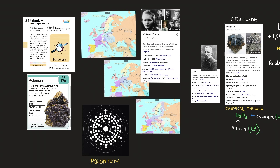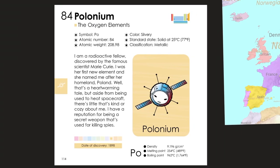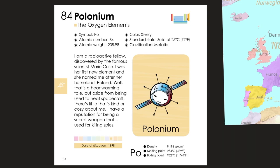Hello everyone, today I want to talk about element number 84, polonium. Here's a preview on polonium. Polonium is part of the oxygen elements. Its symbol is Po, its atomic number is 84, its atomic weight is 208.98. Its color is silvery. Its standard state is solid at 25 degrees Celsius or 77 degrees Fahrenheit. Its classification is metallic.